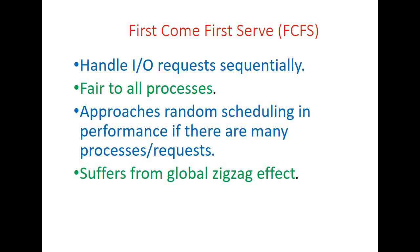First-come first-serve scheduling algorithm handles IO requests sequentially, so it is fair to all processes. This approach results in random scheduling performance if there are many processes or requests. It suffers from a global zigzag effect.